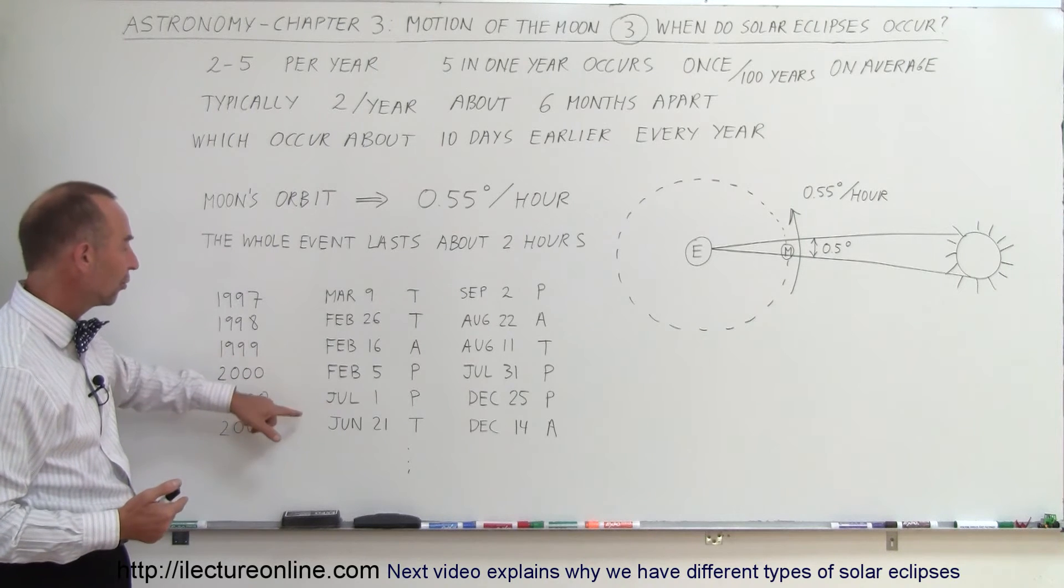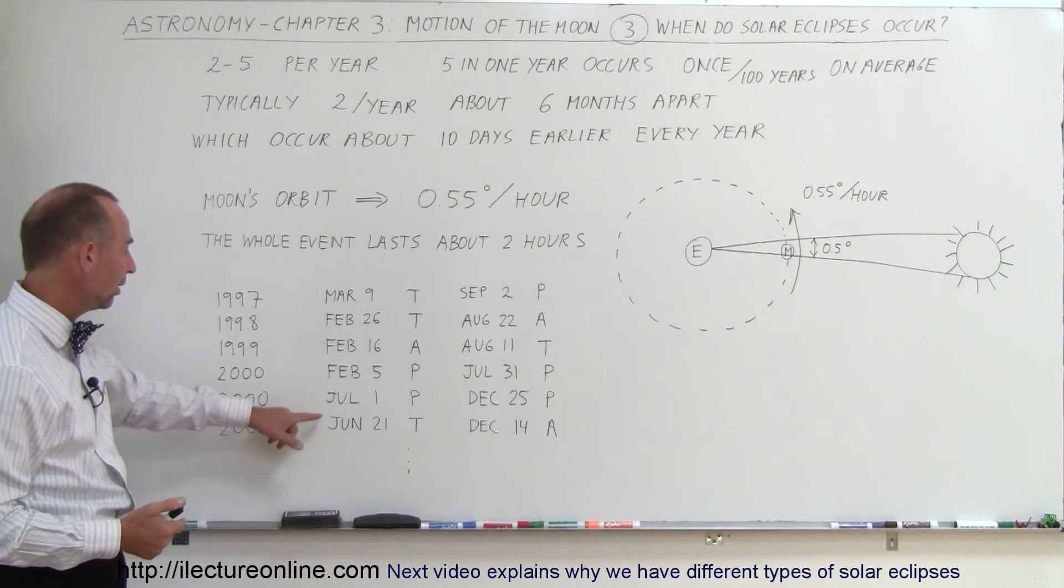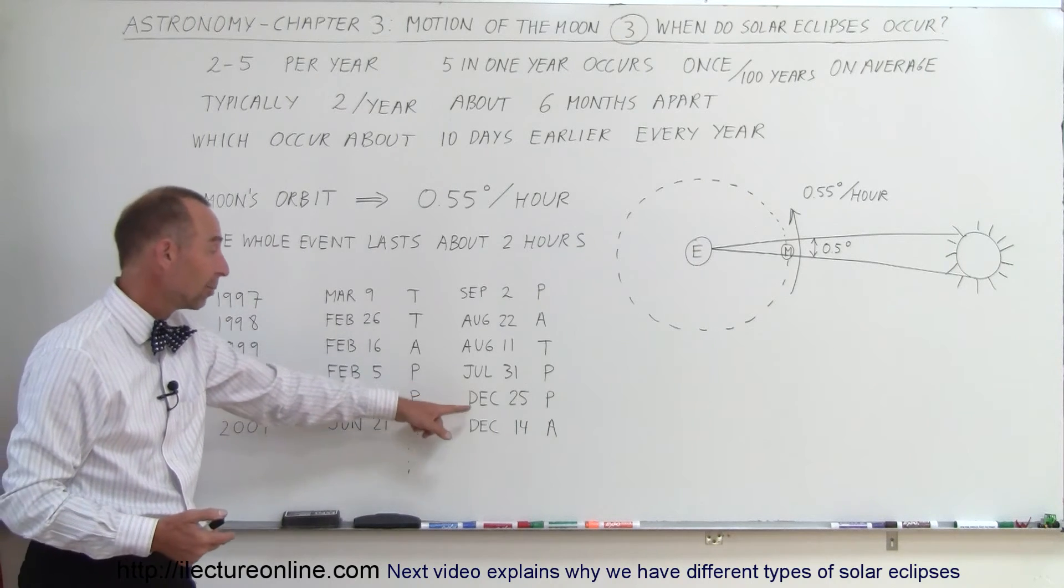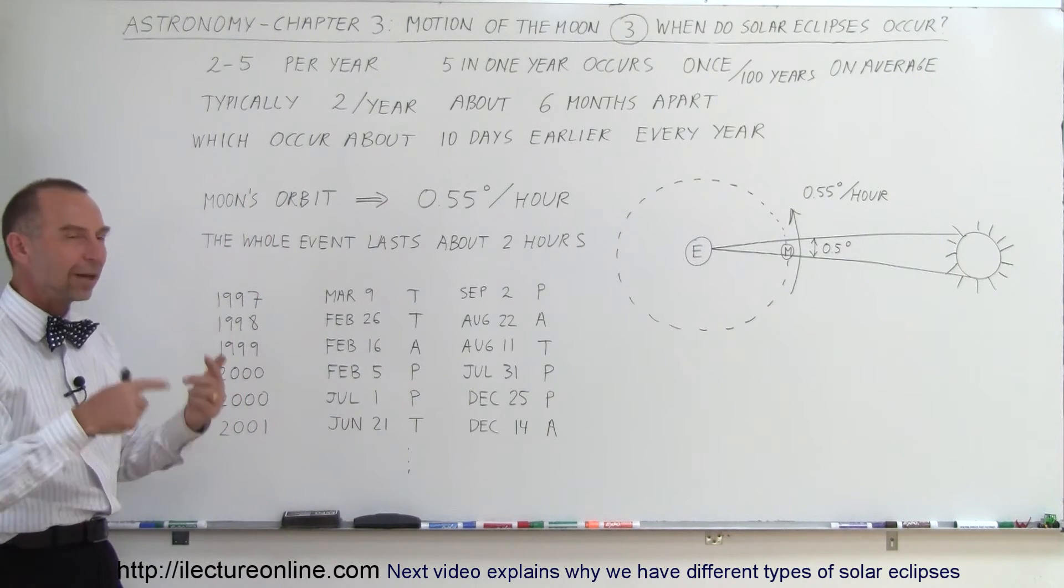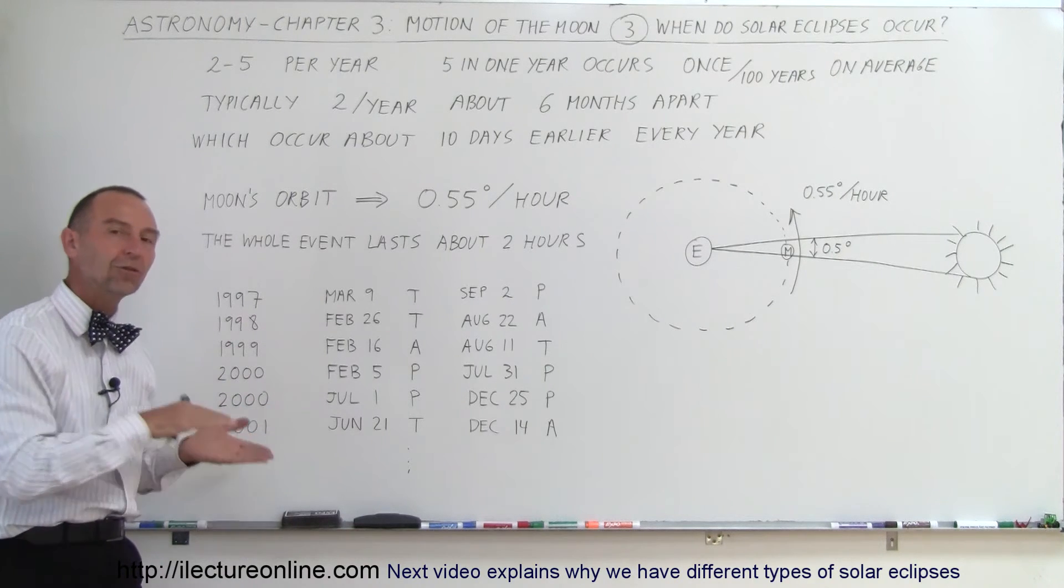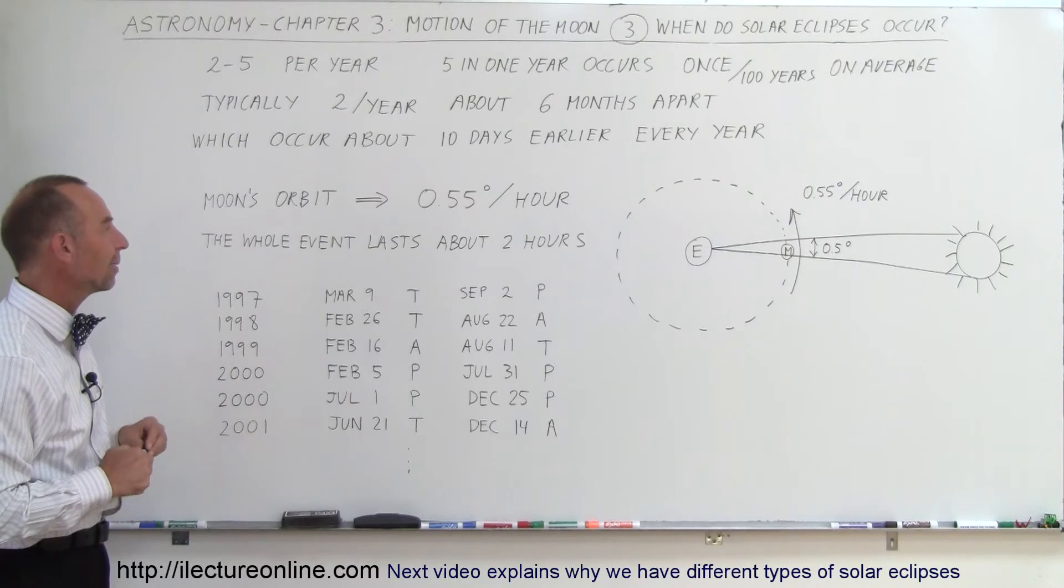But then it goes back to its normal self. Then in 2001, July 1st was the previous one, June 21st, and instead of December 25th, December 14th. So you can see there's this pattern where it happens about twice a year and happens about 10 or 11 days earlier every year to repeat that same pattern.